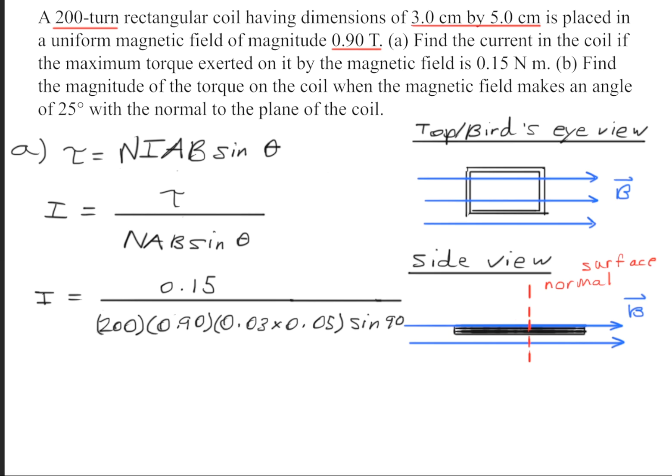Or sometimes we can refer to this as the magnetic moment. As you can see it is perpendicular so it's at a 90 degree angle. This turns it into one. This should give us a current of 0.56 amps.